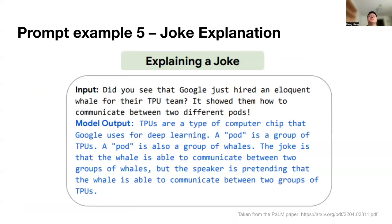The last example is joke explanation. Language models are not only able to understand logic, language, and grammar, but also able to understand some pragmatic perspectives of language. For example, if you give it a joke — 'Did you see that Google just hired an eloquent whale for the TPU team? It showed them how to communicate between two different pods' — this uses the interesting word 'pod,' which means a group of TPUs but also a group of whales. The joke points out that the whale is able to communicate between two groups of whales, which is funny.